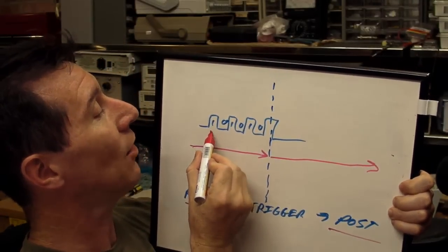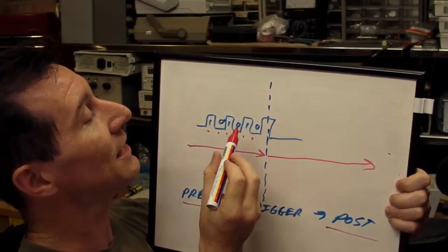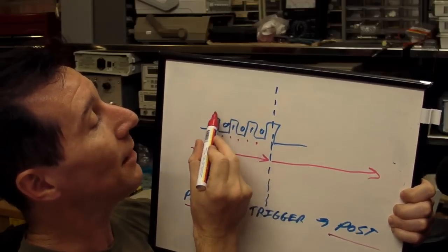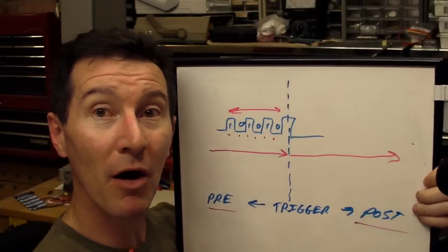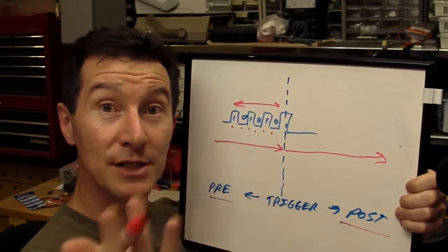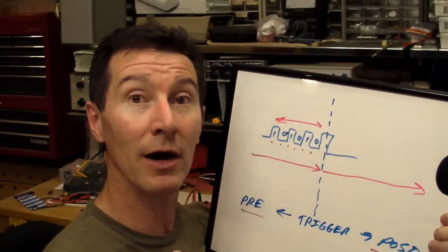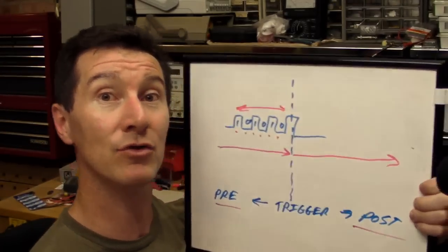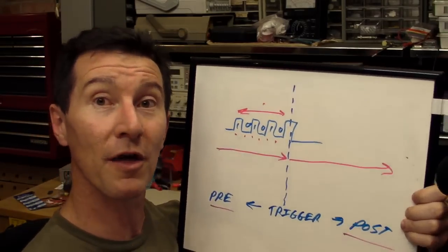Another thing to look for is that the logic analyzer can actually decode serial data in real time and trigger on serial data in real time. It actually analyzes each bit and you can set it up to trigger on a particular word or a particular byte. This is most useful for serial decoding — I2C, SPI, and all those serial type buses. If your system supports those, it's going to be super valuable for you.